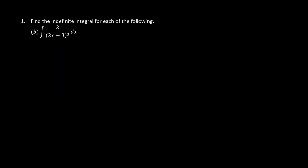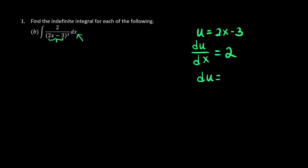If you see something in a bracket raised to the power of something, we're going to use the method of substitution. We're going to use u to substitute whatever is inside the bracket. After substituting, we're going to pay respect to whatever we are integrating — meaning we differentiate with respect to x. So if we differentiate it, we have just 2. Now we are looking for what dx is. We can say that du over dx equals 2, so dx equals du over 2.